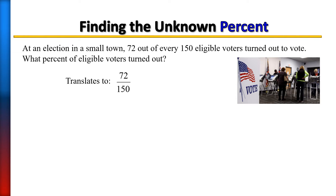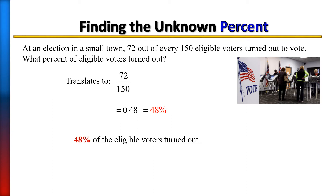Recall that to turn a fraction into a percent, you must first divide the top by the bottom to turn it into a decimal. So do 72 divided by 150 on your calculator, which gives you 0.48. To turn it into a percent, move the decimal point two places to the right and place a percent sign at the end, giving you 48%. So 48% of the eligible voters turned out.